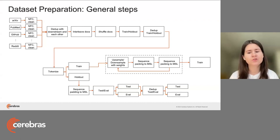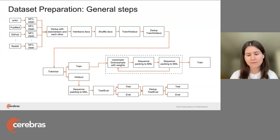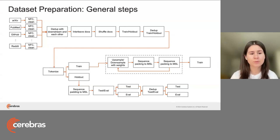The next step is deduplication, which GPT-3 style papers all recommend. Deduplication happens at two different stages. The first is deduplicating the whole dataset against itself — if there is no desire to upsample some documents, you might want to eliminate duplicates. For example, if you have a Common Crawl dataset and C4 in your source combination, C4 is actually part of Common Crawl, so you might want to filter out those intersections.